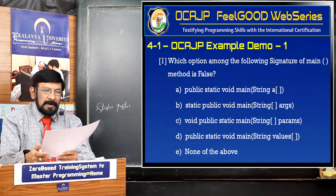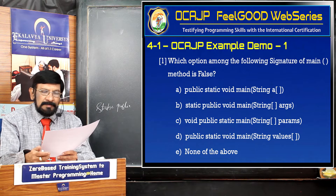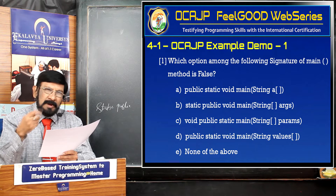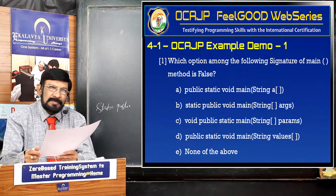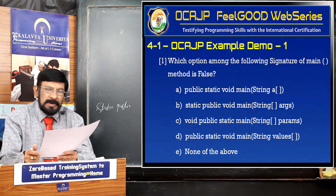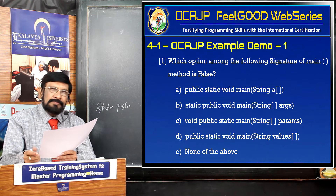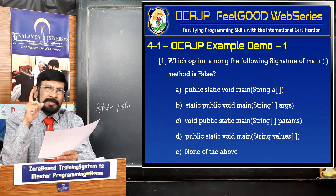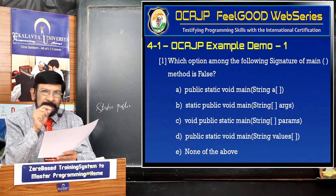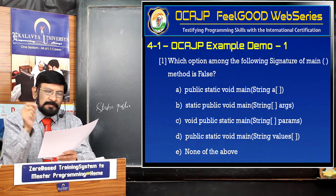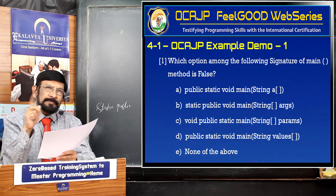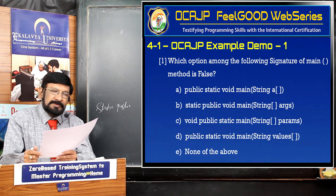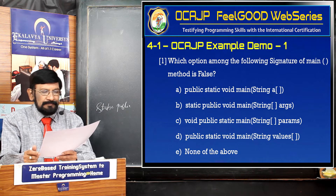Option C: void, public, static, main, String params. 'Params' as a name is fine — any relevant, identifiable name is acceptable. However, 'void' — which means the method does not return anything — should be written just before 'main', nowhere else. That is the mistake here. So C is false, no doubt about that.